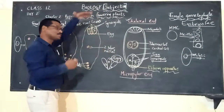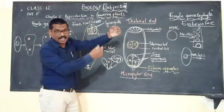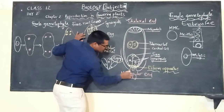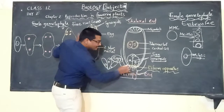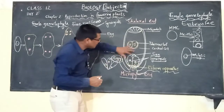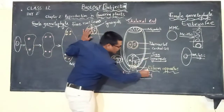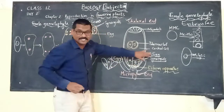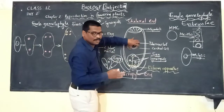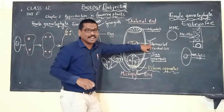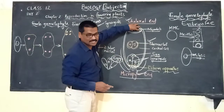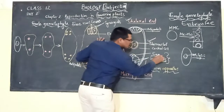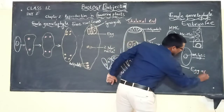When the pollen tube follows the stigma, travels through the style, enters the ovary, and enters the ovule through the micropylar region, the filiform apparatus directs the pollen tube into the synergids and then to fertilize the egg. The two nuclei at the center are called polar nuclei. The egg together with the two synergids is called the egg apparatus.